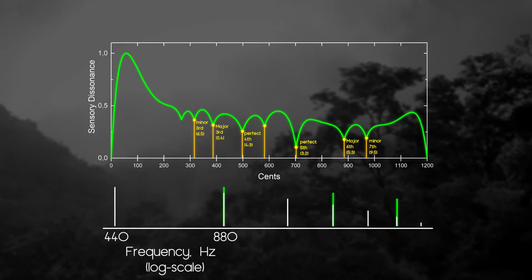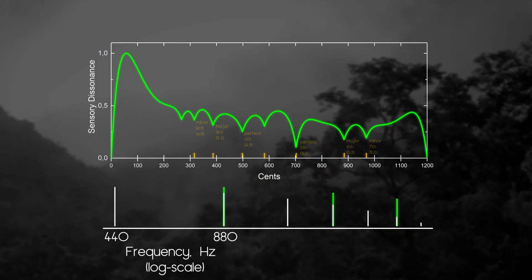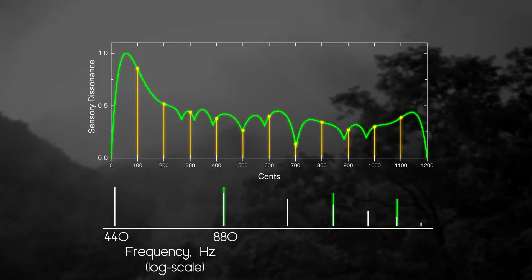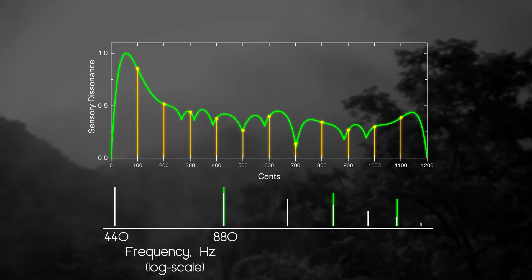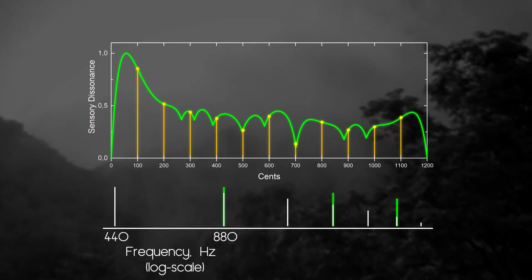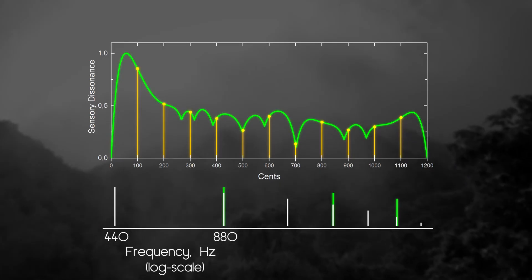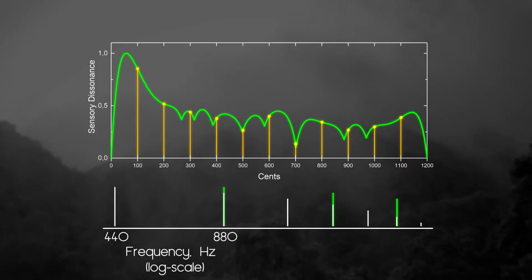Just intonation is somewhat impractical tuning system and today we use 12-tone equal temperament that sacrifices purity of harmony of just intonation, but simplifies the life of a musician a great deal. We can see that not every note falls perfectly on the dip in dissonance curve, some notes do not have corresponding dip at all.